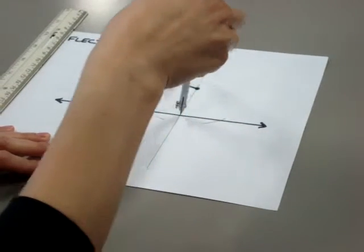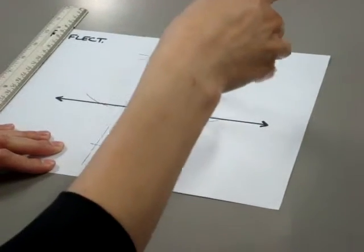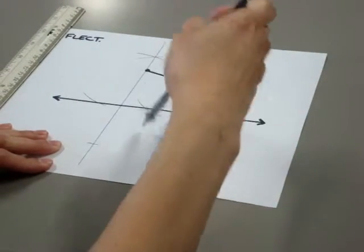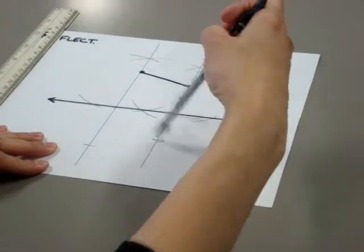Same thing for the second point. From my vector line, mark how far it is using my compass, flip it to the other side, and mark it there.